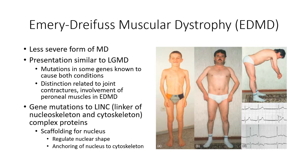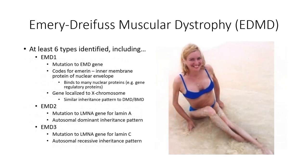In five of the six identified cases of EDMD, the affected protein is part of the LINC, or linker of nucleoskeleton and cytoskeleton complex, which is thought to form a mechanical link between the scaffolding of these two regions. Some of the identified proteins affected in EDMD include Emerin, which received its name from the disease, and is a linker protein that binds the nuclear membrane to the nucleoskeleton.